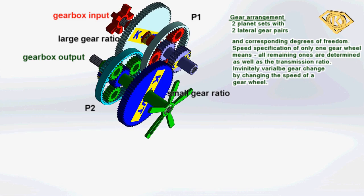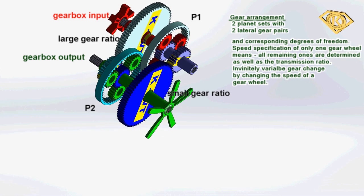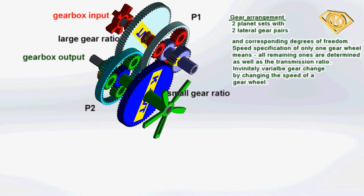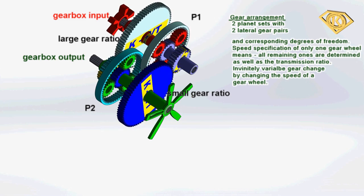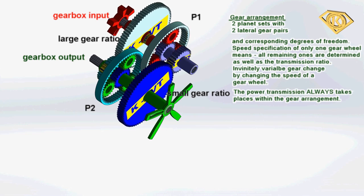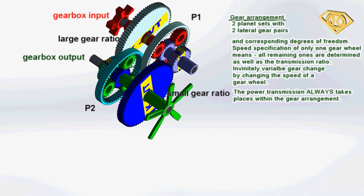The transmission ratio is always formed by the non-positive gears within the gear arrangement. The transmission ratio is clearly determined by influencing or determining the speed of a gear wheel.